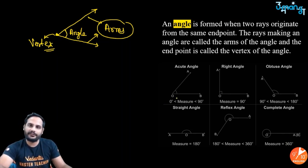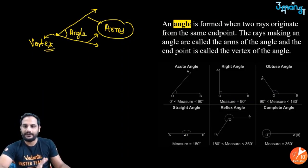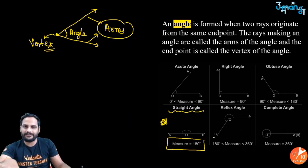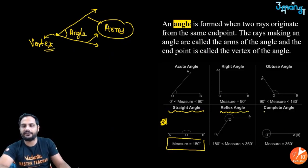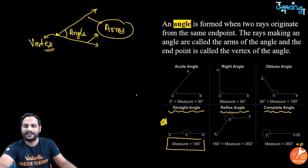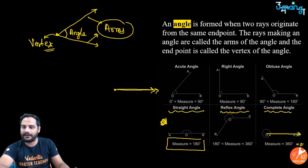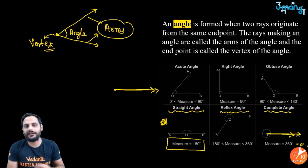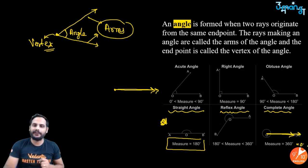Types of angles: an acute angle measures between 0° and 90°; a right angle is exactly 90°; an obtuse angle is more than 90° but less than 180°; a straight angle is 180°; a reflex angle is more than 180° but less than 360°; and a complete angle is 360°. Note that 0° and 360° look exactly the same because 360° completes one full circle.